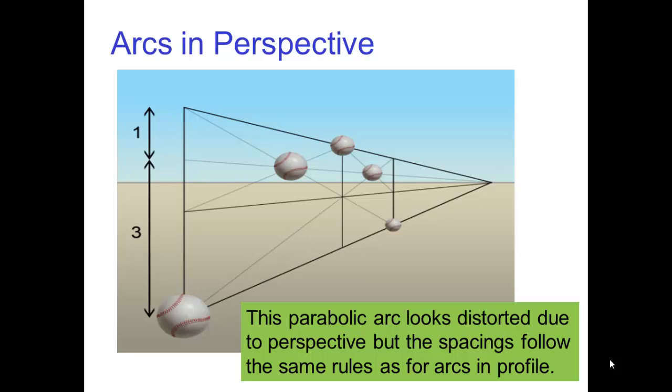You may have noticed that the parabolic arc in that photo of a circus performer flying through the air looks slightly distorted due to perspective. When the motion goes from foreground to background, the parabolic arc will look distorted due to perspective. But the spacings follow the same rules as for arcs in profile.